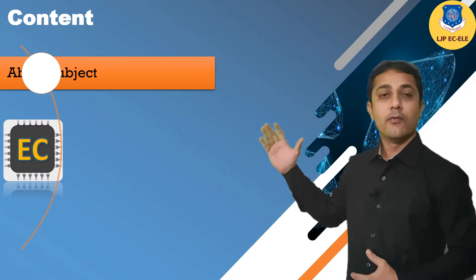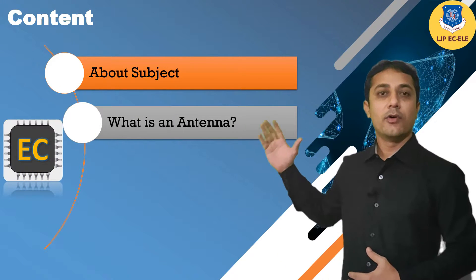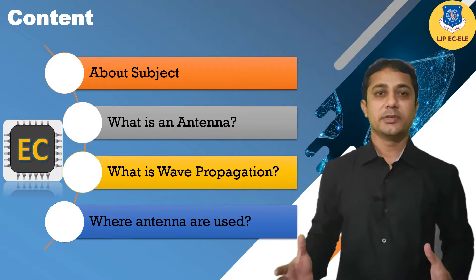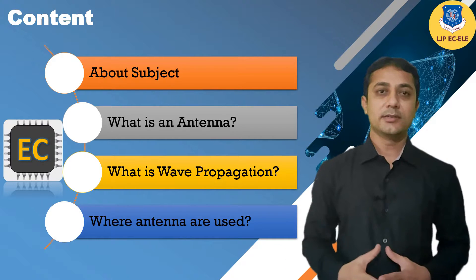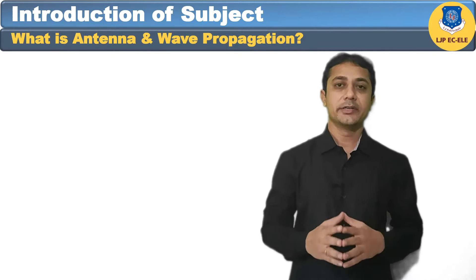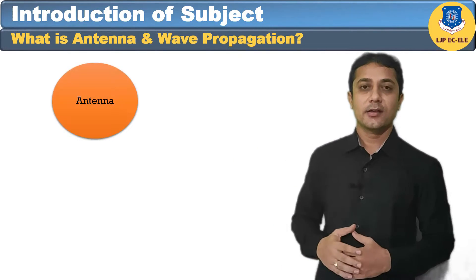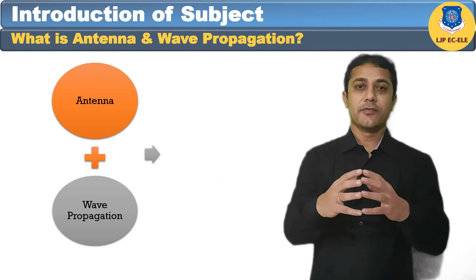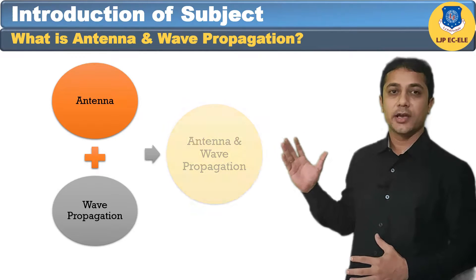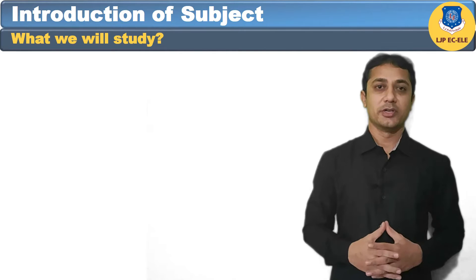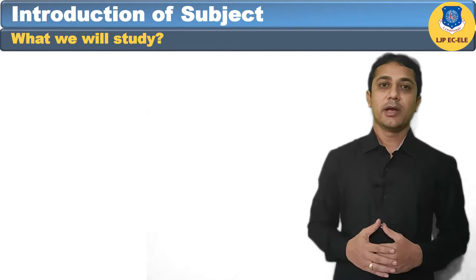About the subject: what is the antenna, what is the wave propagation, where the antenna are used — that means the applications of the antenna. Let's see them one by one. The antenna and wave propagation subject is basically divided into two parts: first is antenna and second is wave propagation, and combined they form the subject antenna and wave propagation.